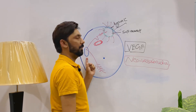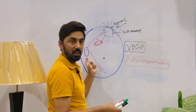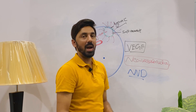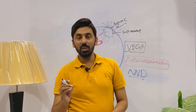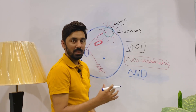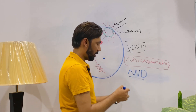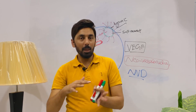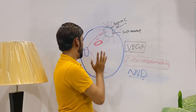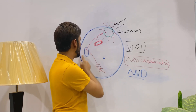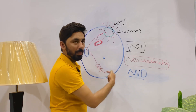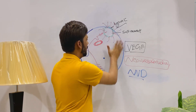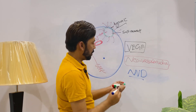If the neovascularization is at the level of the disc — at the optic nerve head — it is called NVD: neovascularization at the disc. If the neovascularization is located elsewhere in the retina, not at the disc, specifically within the temporal arcade or the peripheral retina, it is called NVE: neovascularization elsewhere.